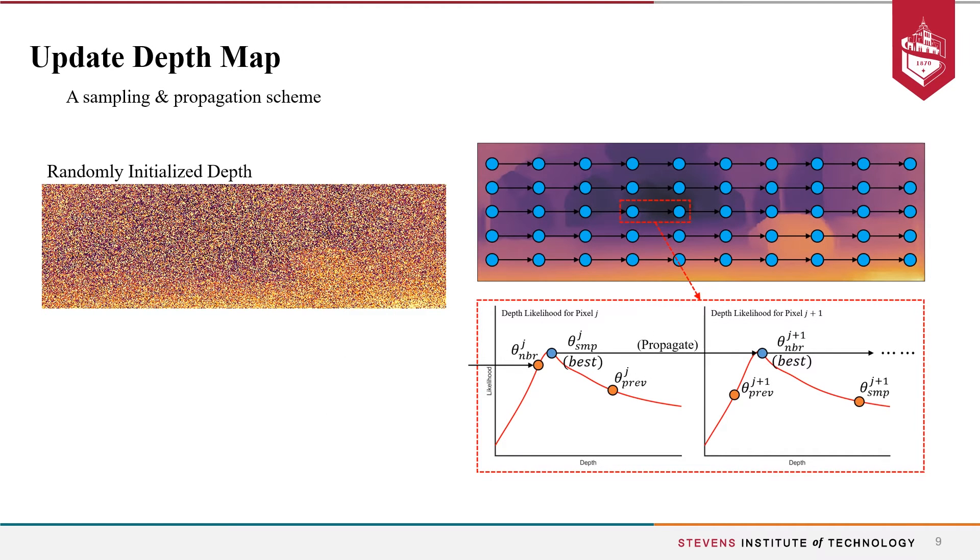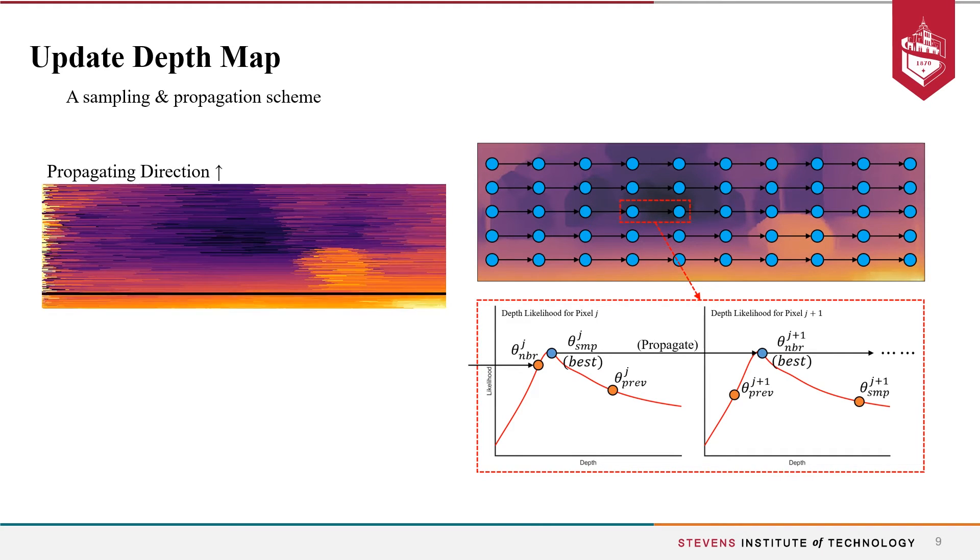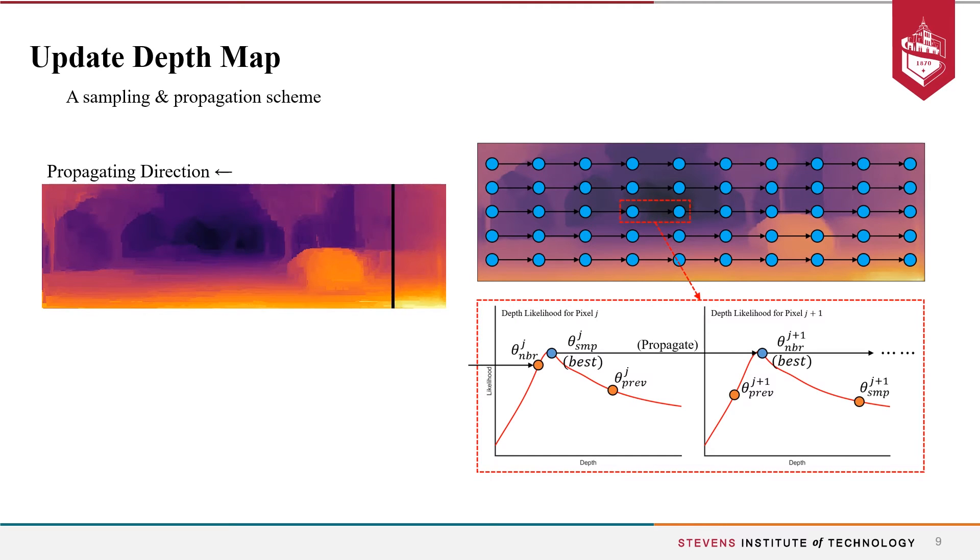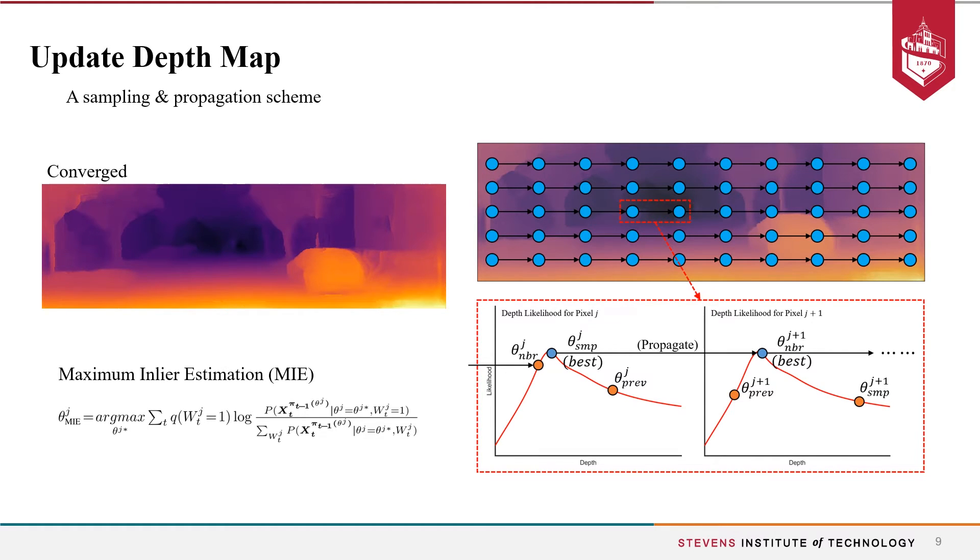For updating the depth map, we adopted a sampling and propagation scheme where the image 2D field is broken into alternatively directed 1D chains while depth values are randomly sampled and propagated through each chain. Furthermore, instead of standard MLE criteria for picking optimum depth, we introduced a maximum in-lier estimation, MIE criteria that maximizes for the rigidness maps, which achieve better accuracy.